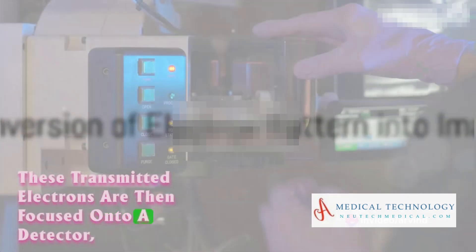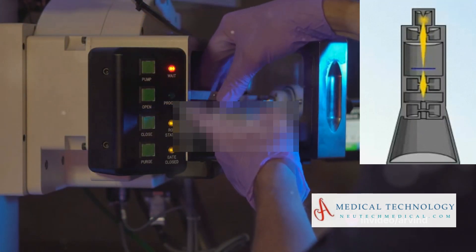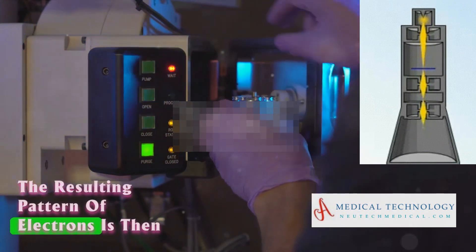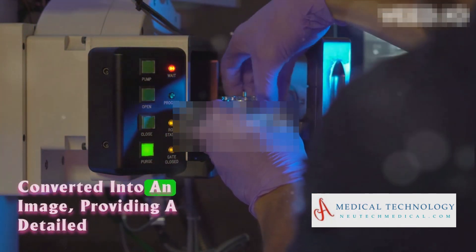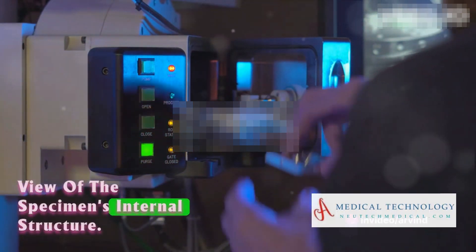These transmitted electrons are then focused onto a detector, such as a fluorescent screen or a sensor. The resulting pattern of electrons is then converted into an image, providing a detailed view of the specimen's internal structure.